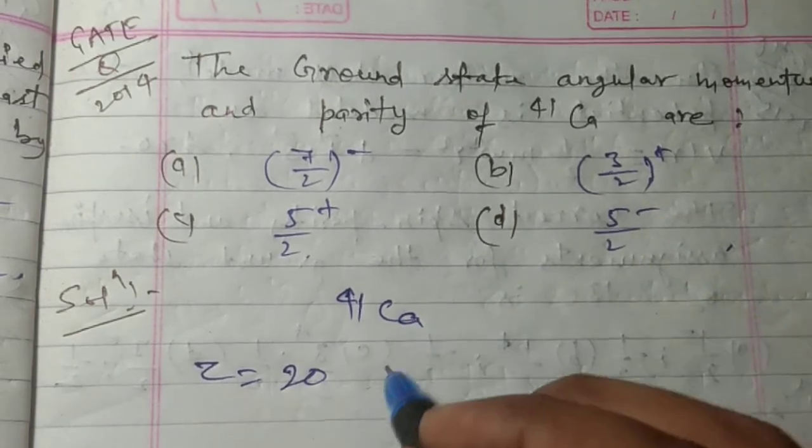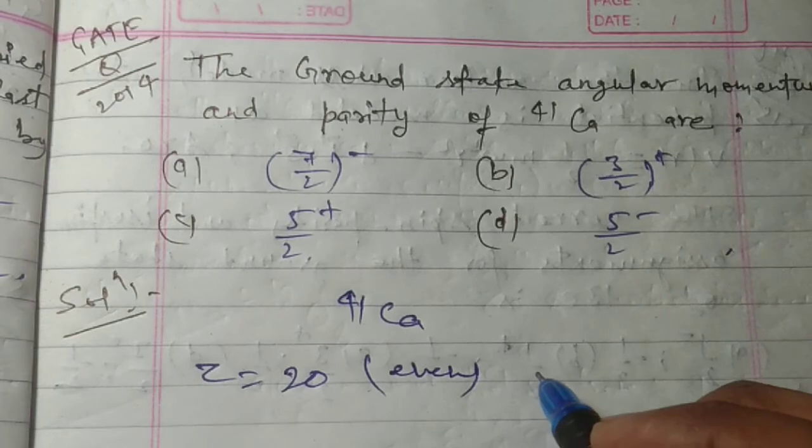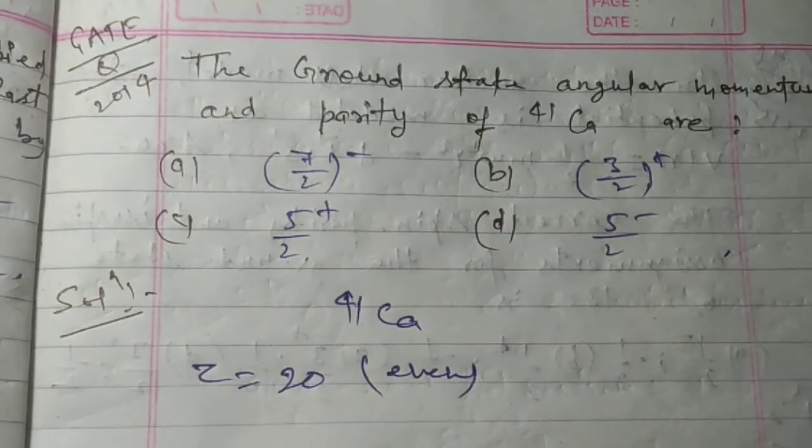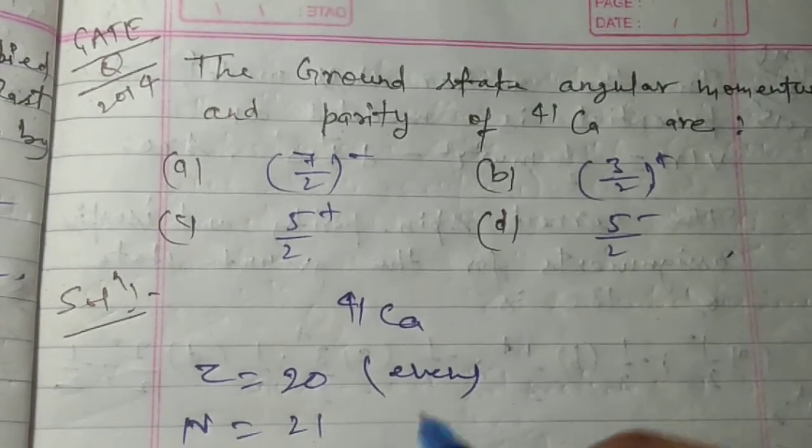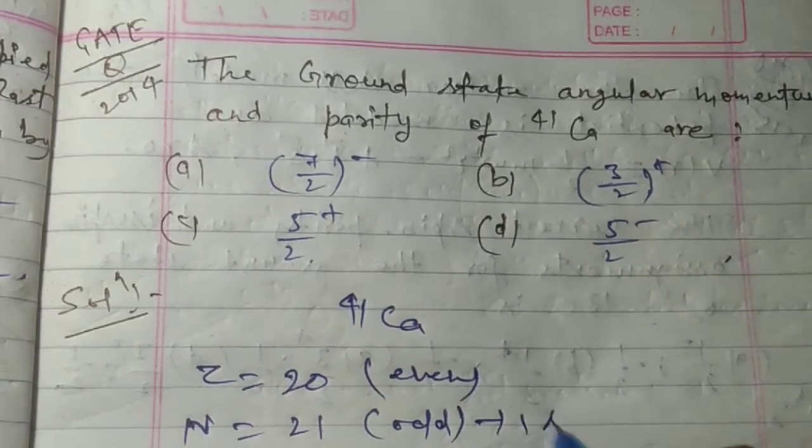Here the number of protons is 20, which is even, so it doesn't contribute to angular momentum. And the number of neutrons is 21, which is odd, and this will give...